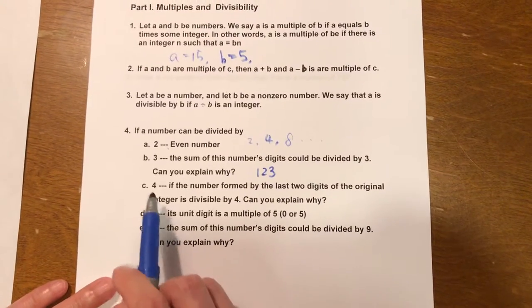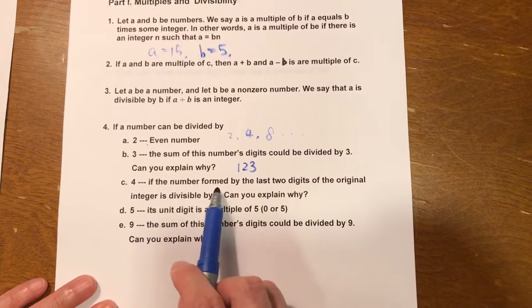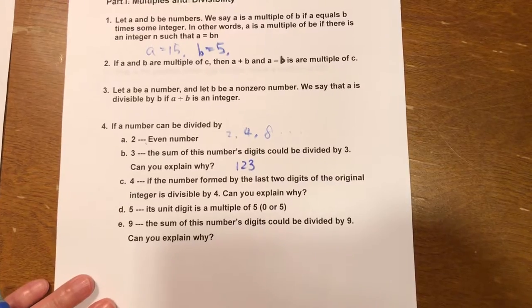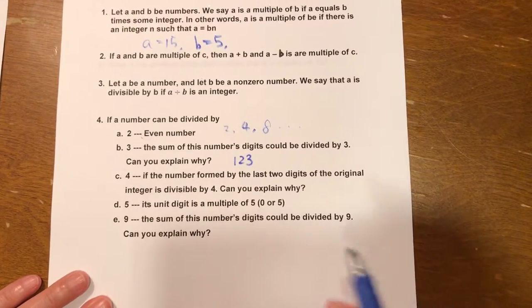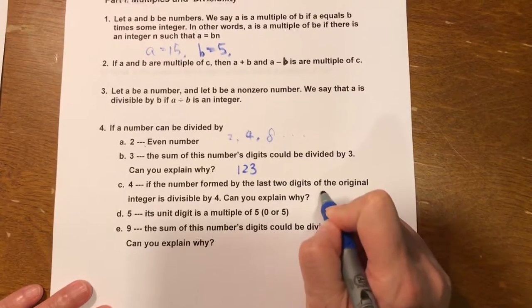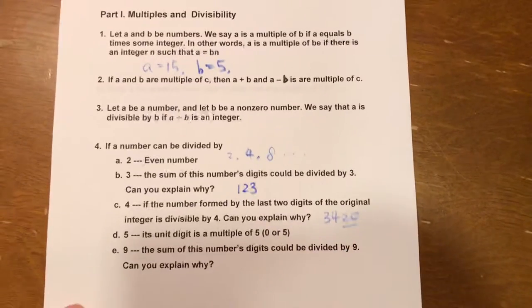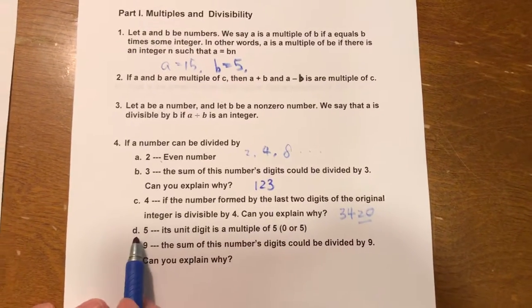Part C. A number can be divided by 4 if the number formed by the last two digits of the original integer is divisible by 4, then the whole number can be divided by 4. For example, we have 3,420. If 20 can be divided by 4, the whole number can be divided by 4.